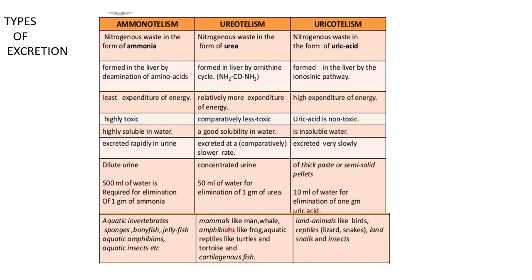Urotelism is present in mammals like humans, whales, amphibians like frogs, aquatic reptiles like turtles and tortoises, and cartilaginous fish. Uricotelism is found in land animals like birds, reptiles such as lizards and snakes, snails, and insects.